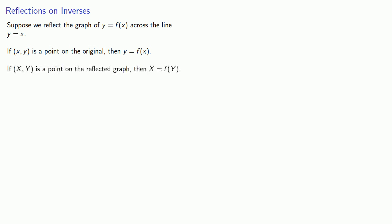Now let's think about what we have. Suppose we reflect the graph of y equals f of x across the line y equals x. If (x,y) is a point on the original, then y equals f of x. Now if capital X, capital Y is a point on the reflected graph, then since our reflection is going to involve changing x and y, capital X equals f of y. And so our reflected graph has equation x equals f of y.